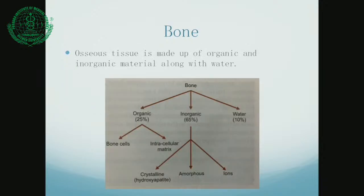Bone is a nauseous tissue which is made up of inorganic and organic material along with water. The distribution being: organic 25%, inorganic 65%, and water 10%. The organic constituent has bone cells and intracellular matrix. The bone cells being osteoclasts, osteoblasts, and osteocytes. Whereas the inorganic has crystalline hydroxyapatite, the cement-like structure which forms the main bone structure, along with the amorphous component and ions.